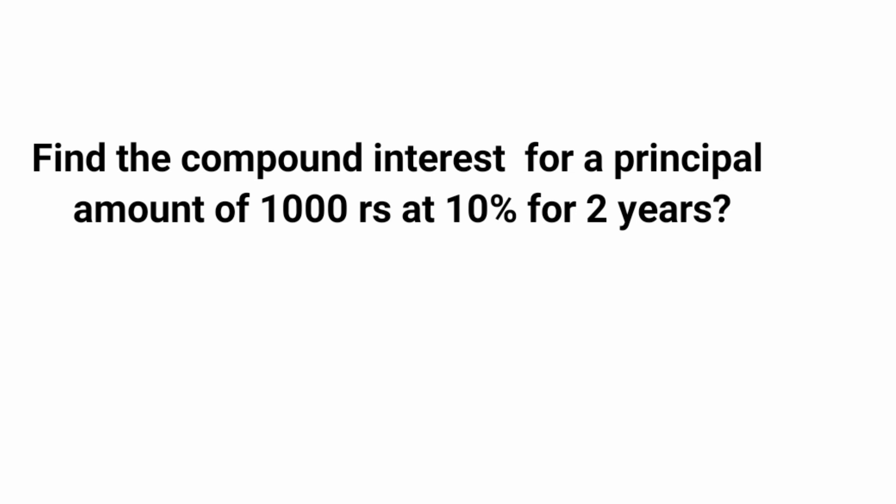The first question: find the compound interest for a principal amount of 1000 rupees at 10% for 2 years. Since the number of years is 2, take the second row from Pascal's triangle: 1, 2, 1. Write the principal amount below the first number, so write 1000 below 1. Below 2, take 10% of 1000, which is 100. So write 100 below 2.